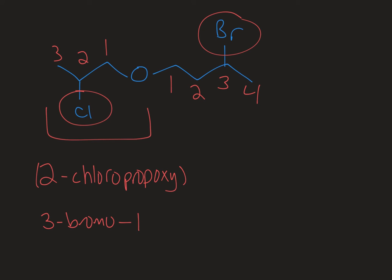At the one position on the main chain is a 2-chloropropoxy, and then you've got your main chain which is a butane. So the IUPAC name for that is 3-bromo-1-(2-chloropropoxy)butane.